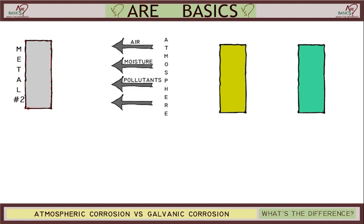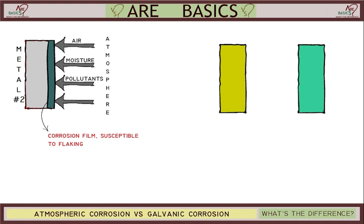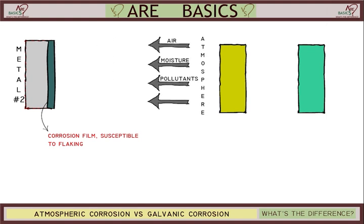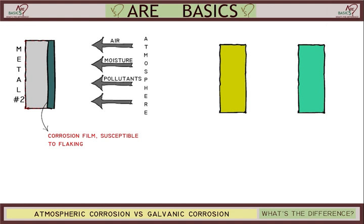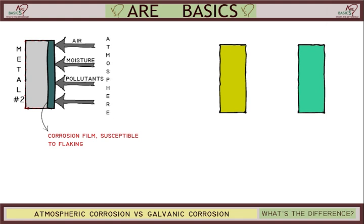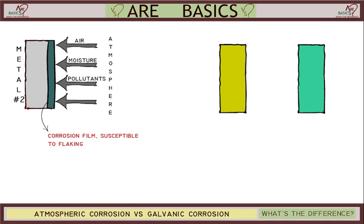However, when metal like copper reacts with not just oxygen but also and mainly moisture and pollutants, it creates a corrosive layer like patina in this case. This corrosive layer is less stable and is susceptible to flaking.